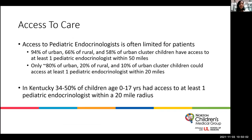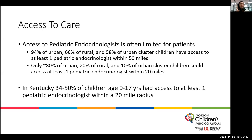Even as the incidence and prevalence of diabetes is increasing, access to care — specifically subspecialty care from pediatric endocrinologists — can sometimes be limited. A 2015 paper assessed the population-based geographic access to endocrinologists in the United States in 2012. They found that 94% of urban, 66% of rural, and 58% of urban cluster children have access to at least one pediatric endocrinologist within 50 miles, but within a 20-mile radius, that access decreases significantly to only about 80% of urban children, 20% of rural children, and 10% of children living in urban clusters.